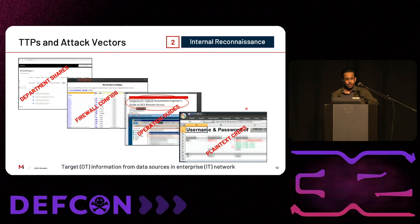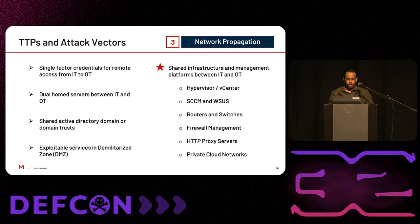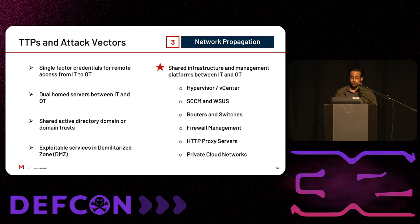I'm not going to go into specific case studies for this phase — almost every exercise involves some kind of internal reconnaissance — but I wanted to cover some examples of targeted information sources. Moving on, initial compromise and internal reconnaissance are often followed by network propagation, which in the context of a typical attack lifecycle translates to propagation from an initial foothold in the IT network to the target system in the OT network.